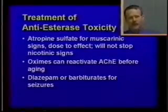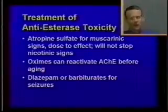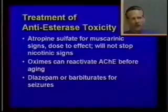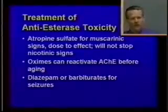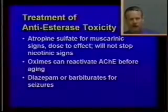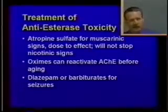Another treatment step is to administer an oxime, sometimes called 2-PAM or pralidoxime. Oximes are capable of reactivating acetylcholinesterase before aging has occurred, so if given early in the course of poisoning they can reduce toxicity of anticholinesterase insecticides. If seizures are occurring, diazepam or barbiturates are effective for controlling the animal. An animal treated with atropine sulfate has a very good prognosis of surviving an anticholinesterase insecticide toxicity.